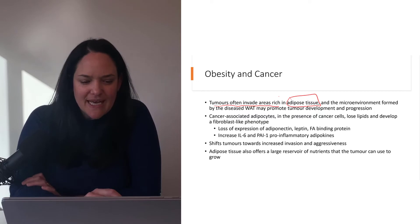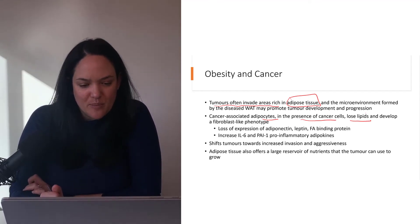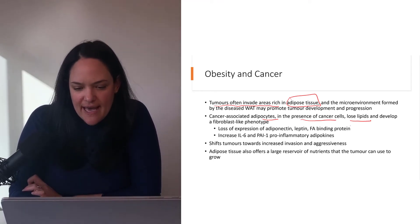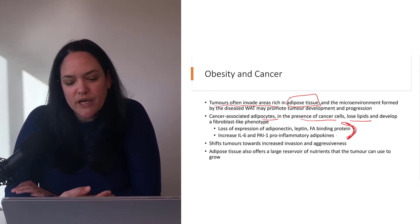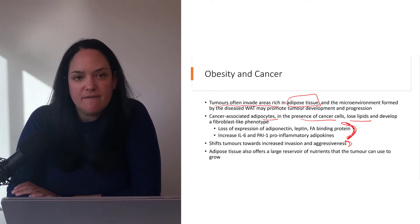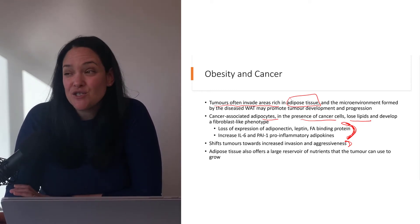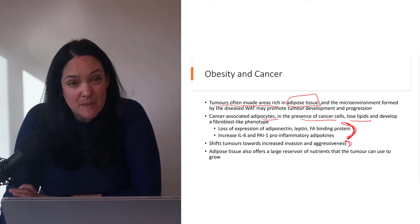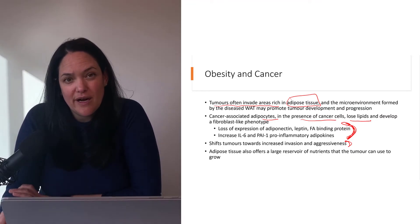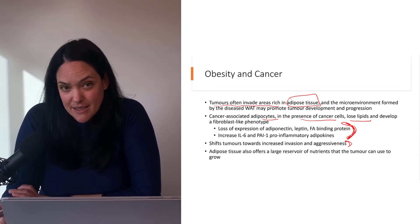Those cancer-associated adipocytes, when cancer cells are present, undergo lipolysis and develop that fibroblast-like phenotype, and again change their adipokine secretion patterns, which may shift tumors towards invasion and aggression. Plus, adipose tissue is a great source of nutrients — there are a lot of nutrients and decent blood flow to adipose tissue. Cancer loves that. Cancer wants to grow, and it needs nutrients to grow, so it's a permissible environment for cancer cells.